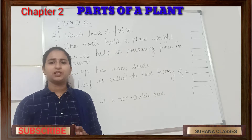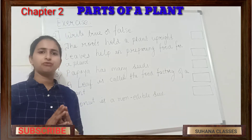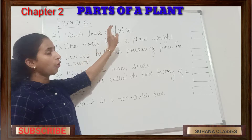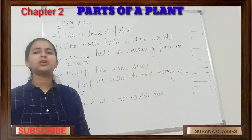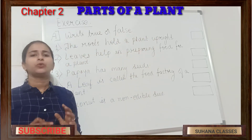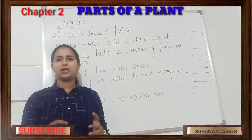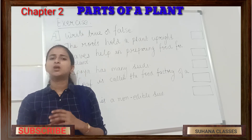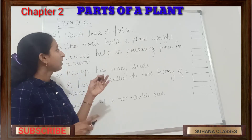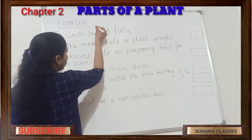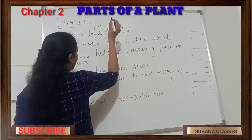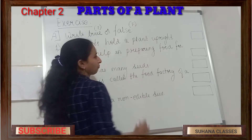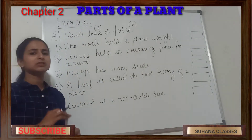In this exercise, the first main question is: write True or False. Some statements are given to us. We have to read those statements and tell whether each one is true or false. If it is true, we'll write T, and if it is false, we'll write F.